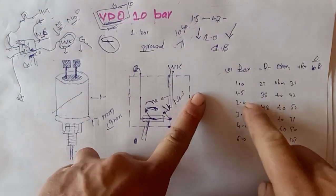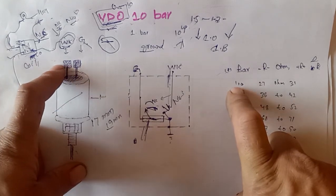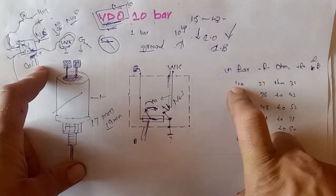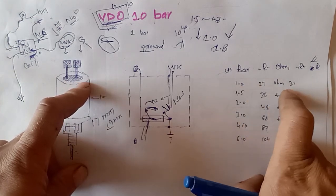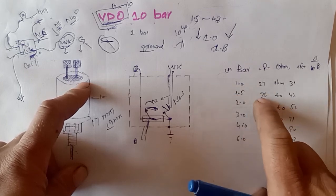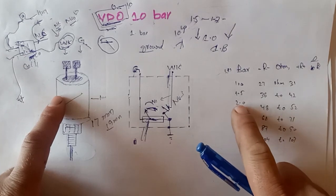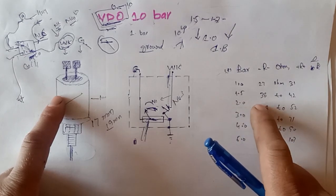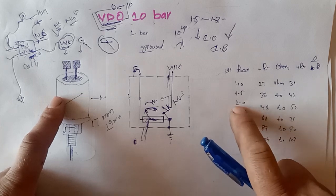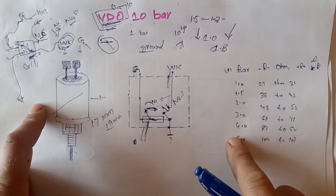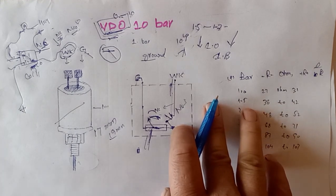If you take a multimeter and measure resistance between the G terminal and the engine chassis: 27 to 31 ohms means you have 1 bar pressure; 38 to 42 ohms means 1.5 bar pressure; and 48 to 52 ohms means 2 bar oil pressure, and so on.